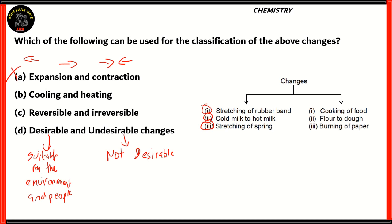For option B, cooling and heating: cooking of food is heating, but flour to dough is not an example of heating, though burning of paper is. On the other side, none of the examples is an example of cooling, so option B is also incorrect. For option D, desirable and undesirable: burning of paper is an undesirable change but the other two are desirable, while on the right side all changes are also desirable, so option D is incorrect.